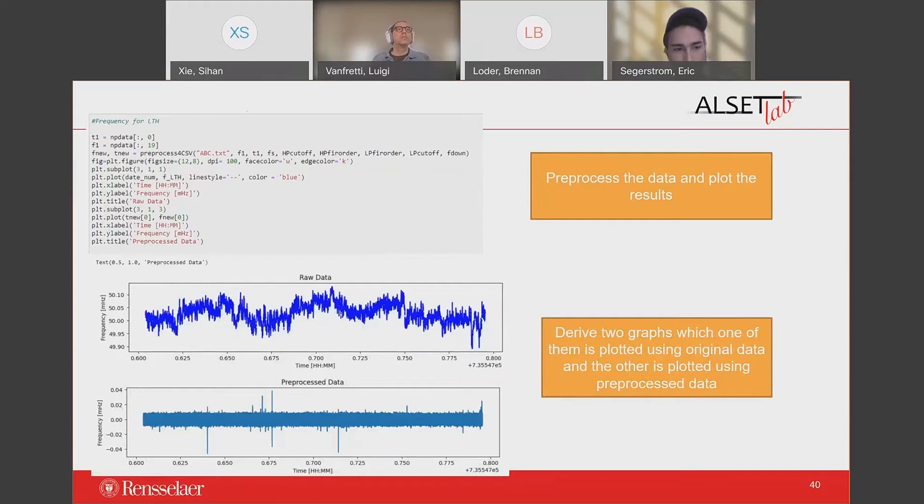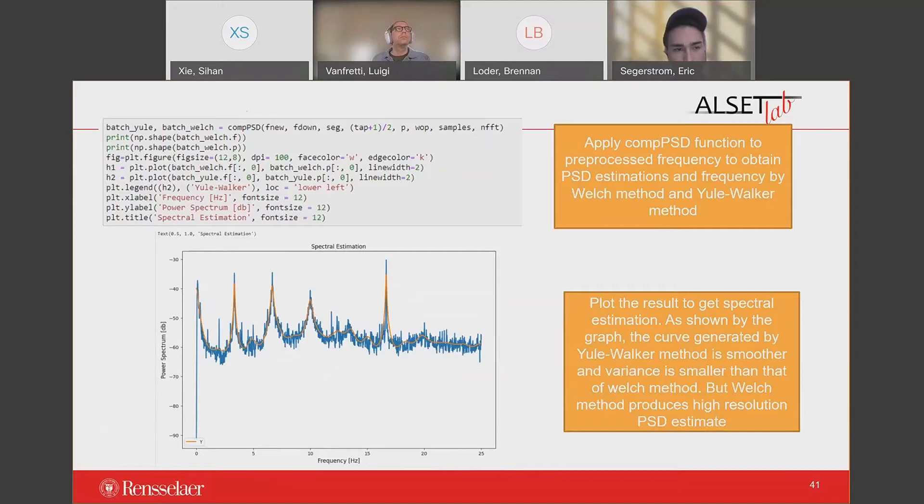Then we can apply the COMPSD function to the preprocessed data to obtain the PSD and the frequency vector by Yule-Walker method and the Welch method. After plotting the curve, we can notice that the curve generated by Yule-Walker method is smoother and the variance is much smaller than that of Welch method. Welch method is able to produce a high resolution PSD estimate than the Yule-Walker method.